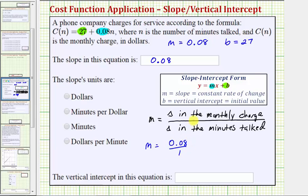The units in the numerator would be the monthly charge in dollars, so this is dollars, and the denominator represents the change in minutes talked, so this would be one minute.